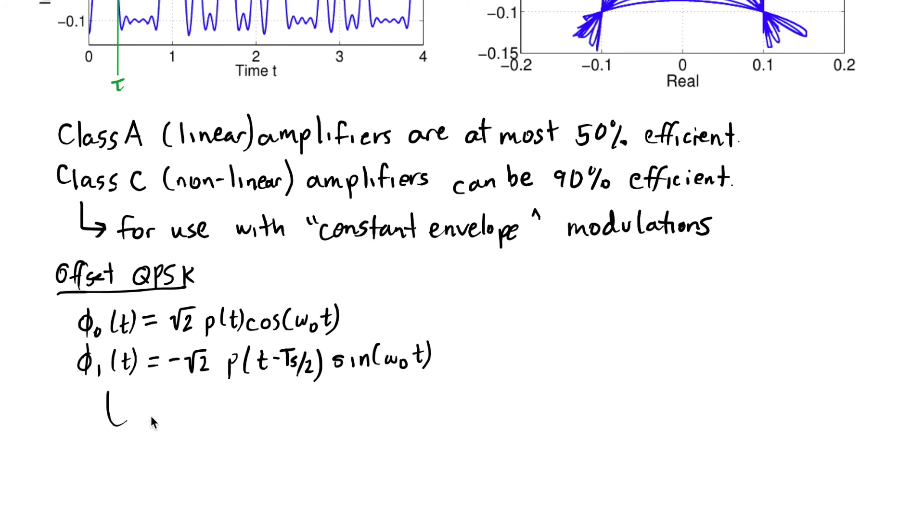And this leads to our S in the offset QPSK case, having an imaginary part delayed again by T_s/2.